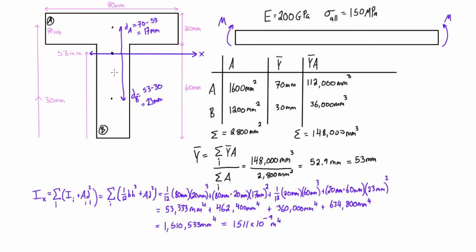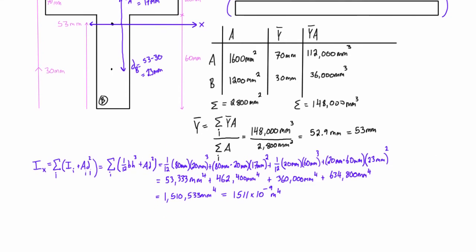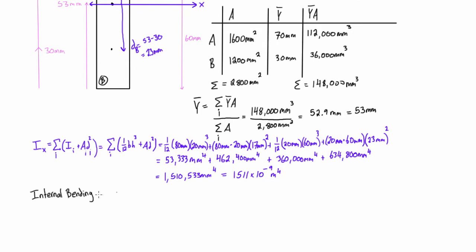This is really the hardest part of the problem and the most time consuming. Where we want to go from here now is we want to calculate the internal bending moment using this expression where we have sigma max equals m times c over I. We're looking for the internal bending moment, so we want to rearrange. We'll get the internal bending moment equals, in this case, sigma max is actually going to be the max allowable because that's what we're calculating for, times the moment of inertia over c.